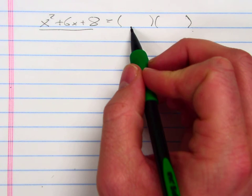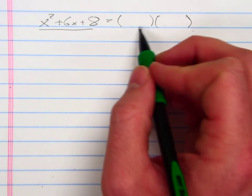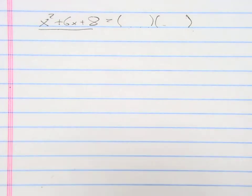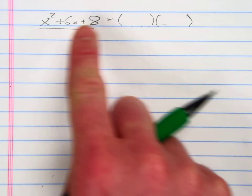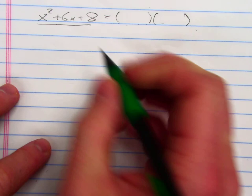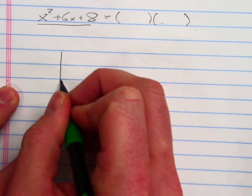In other words, if I try to multiply two binomials using the box method or the distribution method, or even with my algebra tiles, would I get that as my product? So I want to start off by drawing a box, just like we do when we multiply with the box method.